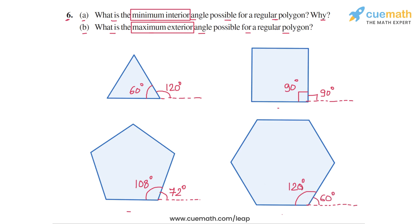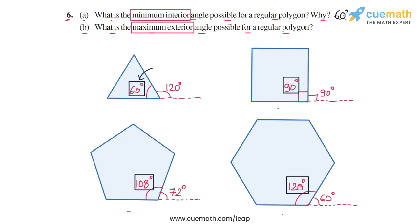Now observe the pattern in the interior angles. We have 60 degrees for a three-sided regular polygon, 90 degrees for a four-sided regular polygon, 108 degrees for a five-sided regular polygon, and 120 degrees for a six-sided regular polygon. The interior angle is increasing as the number of sides is increasing. So the minimum interior angle possible is for an equilateral triangle and that is equal to 60 degrees — the answer for part A.